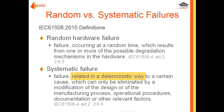The IEC systematic failure definition states: a failure related in a deterministic way to a certain cause, which can only be eliminated by a modification of the design, manufacturing process, operational procedures, documentation, or other relevant factors. That definition is better than the random one, but it's still not great, and we can absolutely understand why different sites would consider the same failure differently.